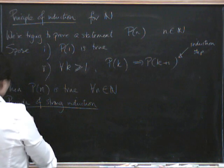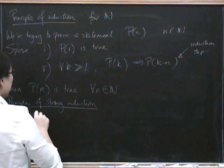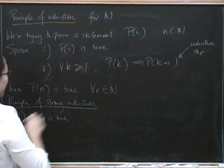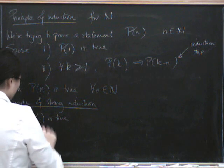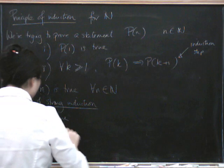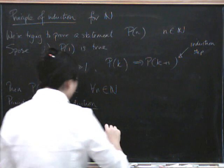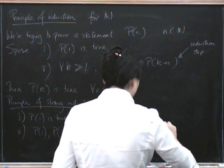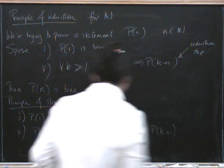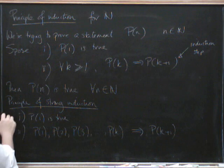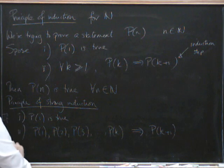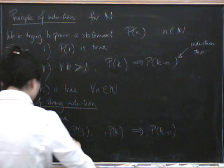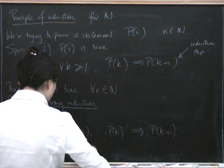So P(1) is still true for strong induction. But for step 2, we have to have P(1), P(2), P(3), and so on, all the way up to P(K) being true. That implies P(K+1). So if this is true, then P(N) is true for all N in the natural numbers.